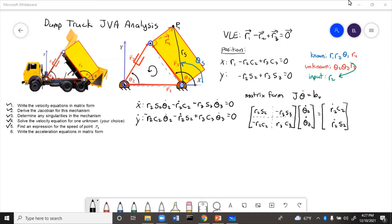Matrix form for acceleration is going to be very similar to velocity. It's just J theta double dot equals ba. First we need to take the derivative of the velocity scalars and then get acceleration.